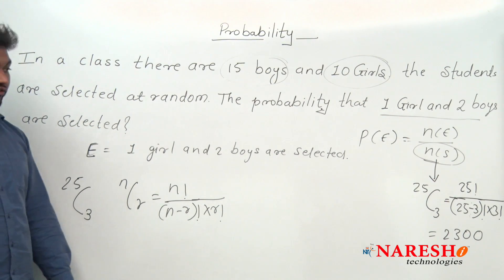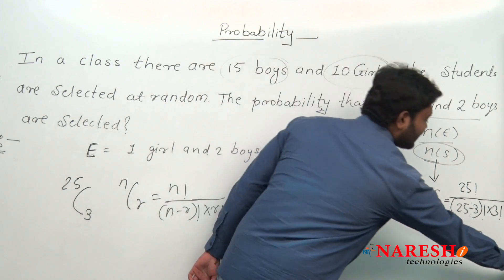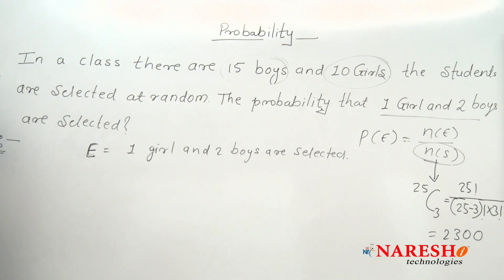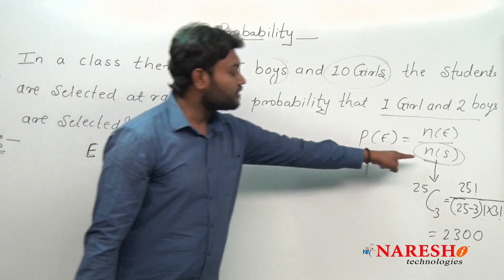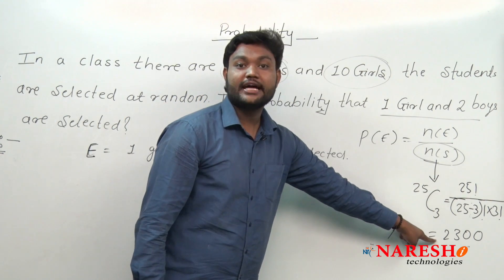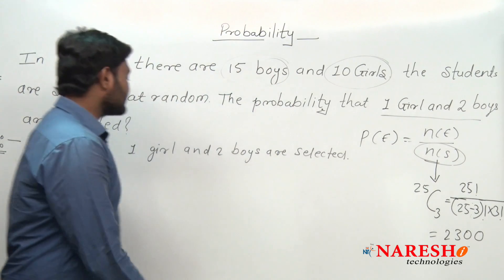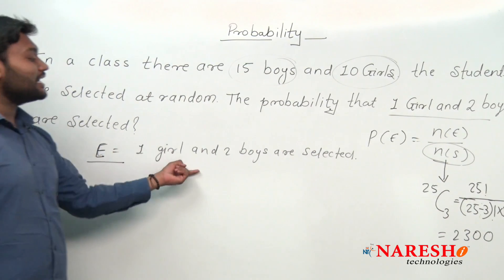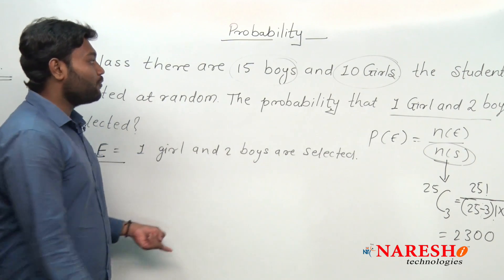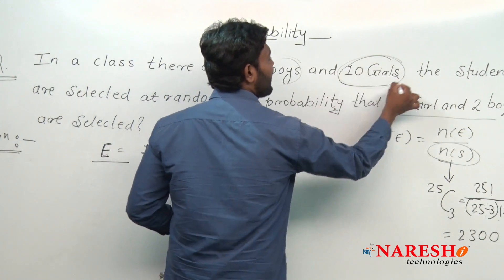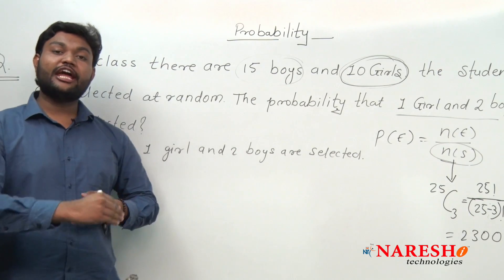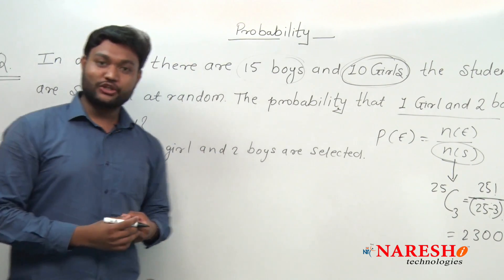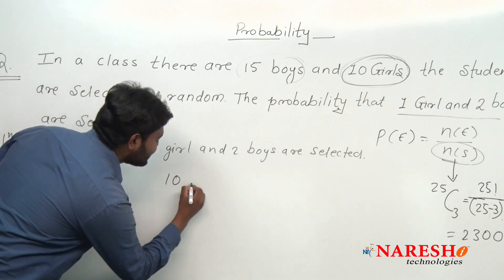Now let us see what is our event. Our event is that one girl and two boys are selected. We have found the number of sample space, which is 2300. Now let us calculate the event. We are having 10 girls. Out of 10 girls, we have to select only one girl. So can I say that is 10C1? Yes, obviously.